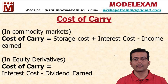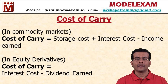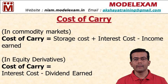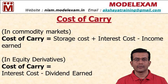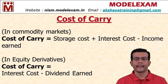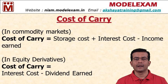In equity derivatives, the cost of carry is the interest cost minus the dividend earned. There is no storage cost in equity derivatives because all shares are stored in a DMAT account, so no physical storage is involved. The income earned from the asset is dividends, so cost of carry in equity derivatives is interest cost minus dividend earned.